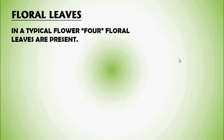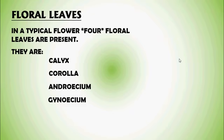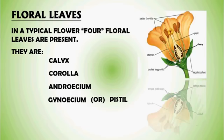Floral leaves or Floral parts: in a typical flower, four floral whorls are present. They are Calyx, Corolla, Androecium, and Gynoecium or Pistil. All four parts can be observed in this photograph.